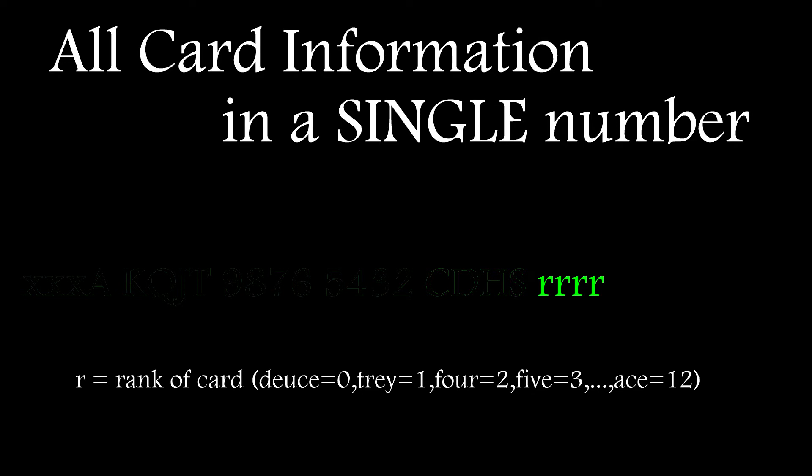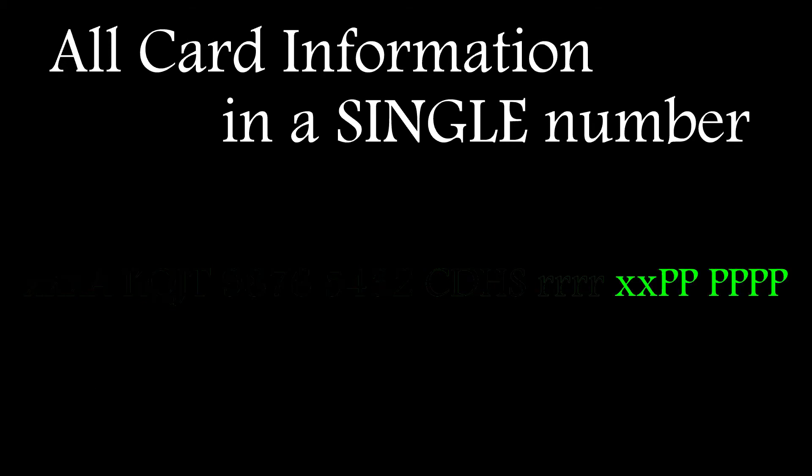The card rank is encoded in four bits so a 2 will be a 0, a 3 will be a 1 and so on up to an ace which will be a 12. And the prime numbers will increase sequentially up to an ace which is set as 41.